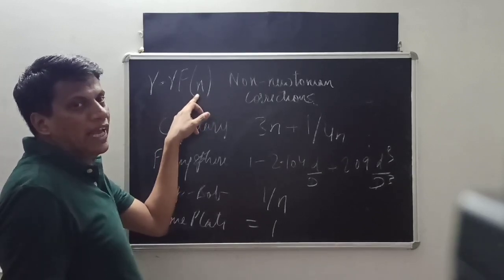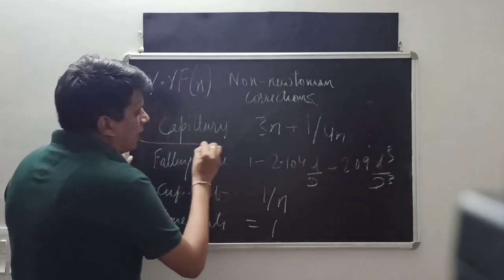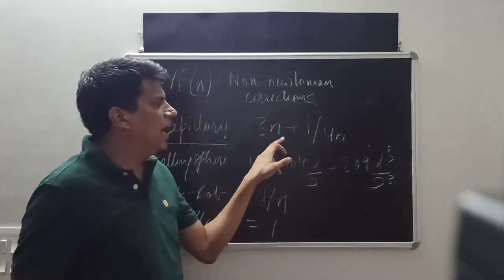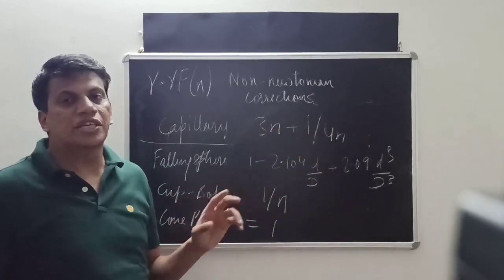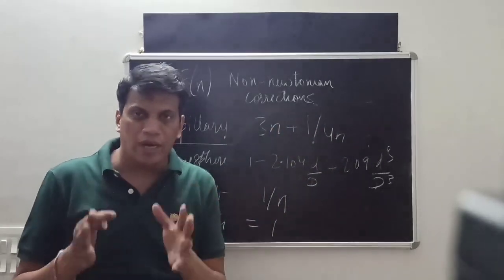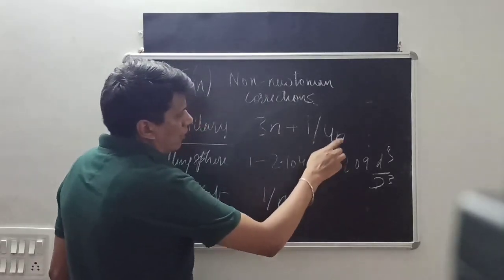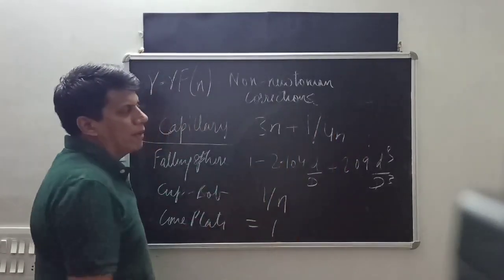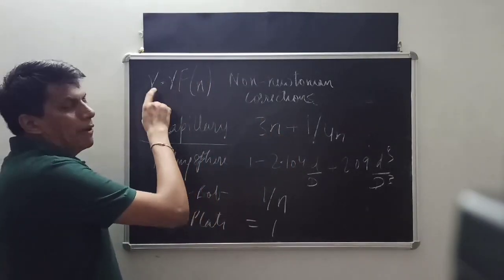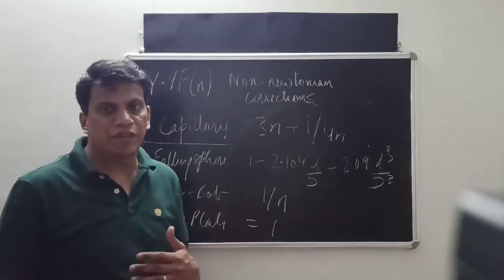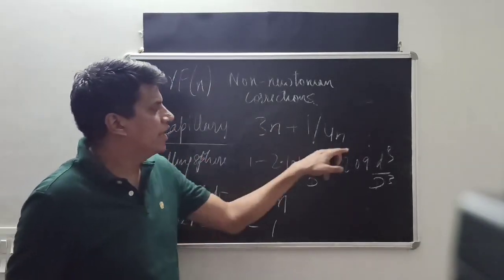The corrected viscosity equals the original viscosity divided by the correction factor, multiplied by n, where n is a constant. For a capillary viscometer, the correction factor is (3n + 1) / 4n. The value of n is determined from the rheogram, and then (3n + 1) / 4n is calculated and applied to correct the viscosity.